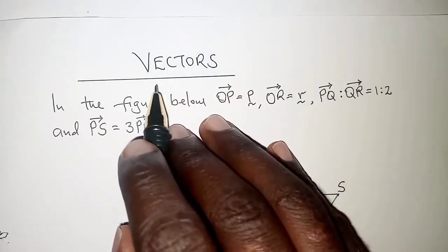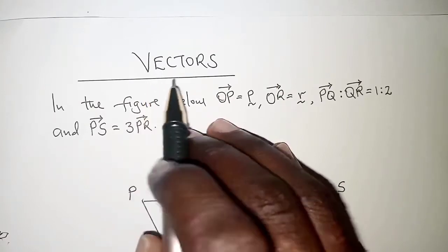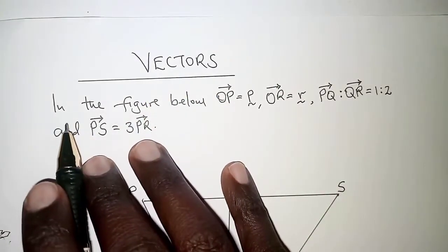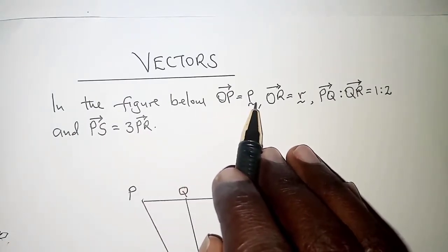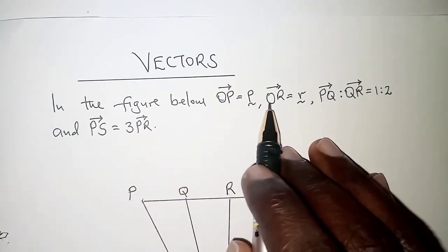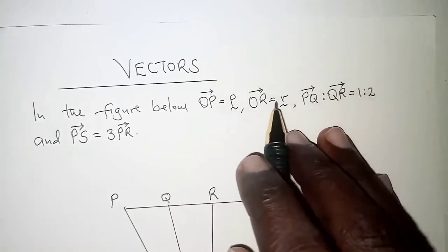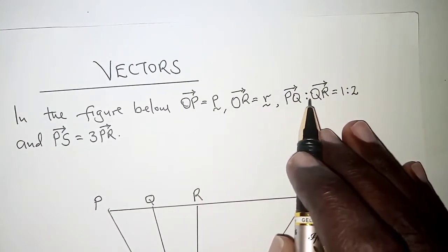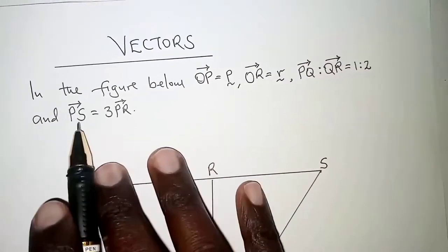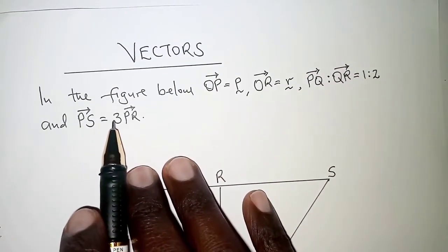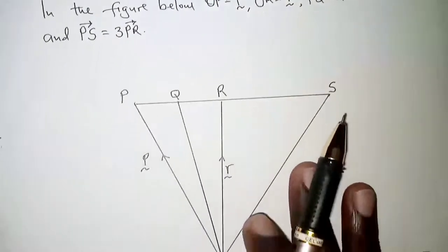In today's presentation we are going to look at vectors. The equation we have reads: in the figure below, the position vector of P is given by p and the position vector of R is given by r. The ratio PQ to QR is 1 to 2, and PS is equal to 3PR.